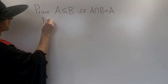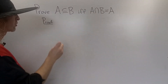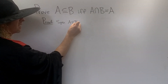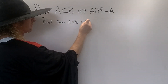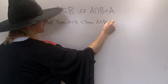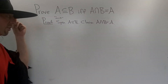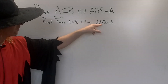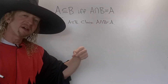First, we're going to assume A is a subset of B and then show A intersection B is equal to A. So we start by assuming that A is a subset of B. The claim is that A intersection B is equal to A. I'll use a little arrow to indicate which direction we're showing. We'll use the method of double inclusion to show these sets are equal.